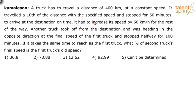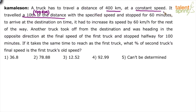He is talking about two trucks. The first truck has to travel a distance of 400 kilometers at a constant speed. It traveled a tenth of the distance — one-tenth of 400 kilometers, which means 40 kilometers — with the specified speed. Let us assume the speed was supposed to be S. So it traveled this 40 kilometers at the specified speed S.